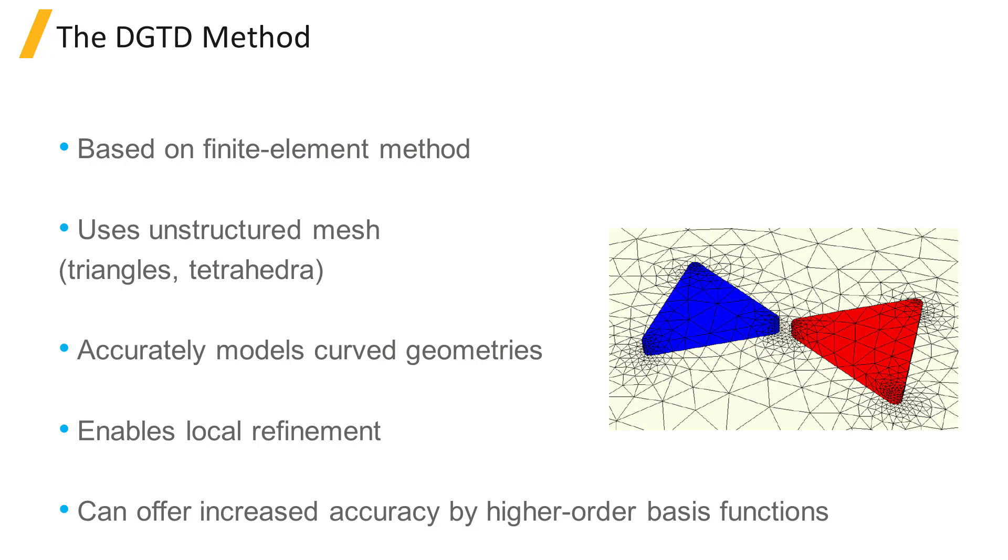In a DGTD simulation, on each mesh element the solver expands the electric field and the magnetic field into polynomials up to a user-specified order. A higher polynomial order leads to a more accurate solution but also increases the computational cost.